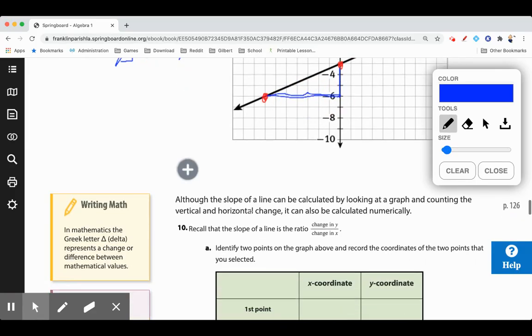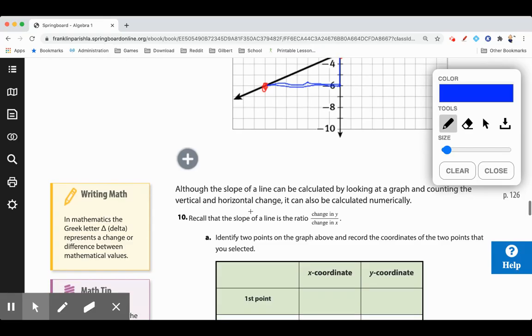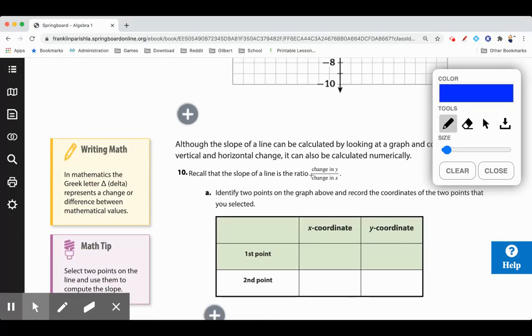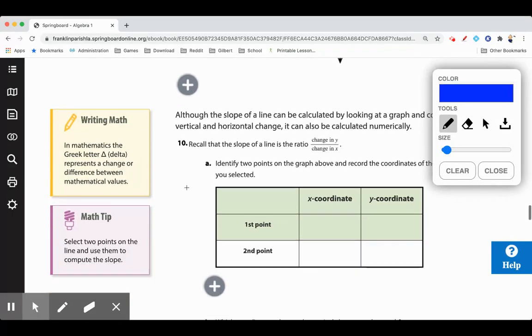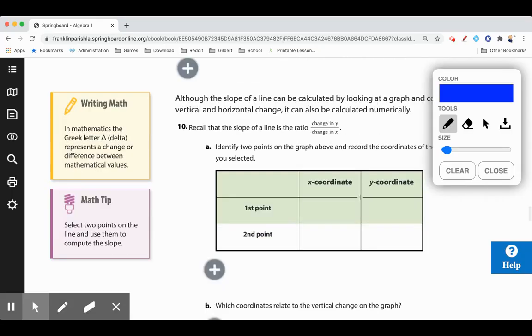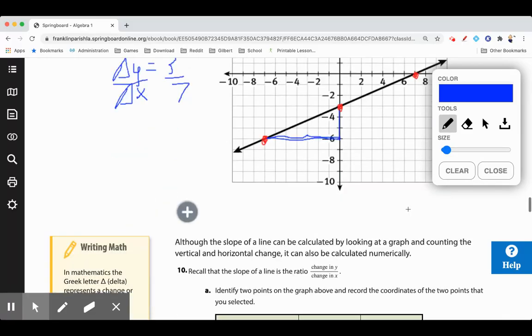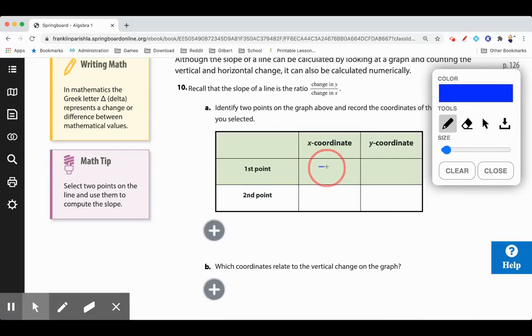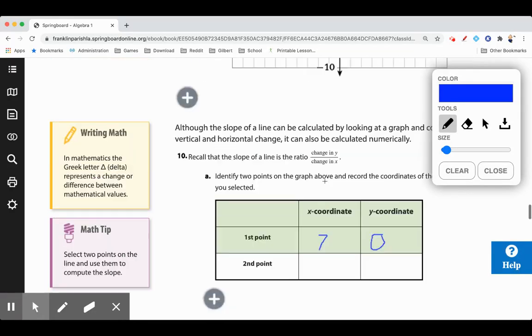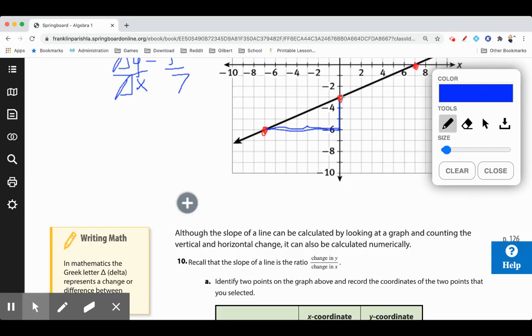Although the slope of the line can be calculated by looking at the graph and counting the vertical and horizontal change, it can also be calculated numerically, which basically means we need to add or subtract numerically with numbers. Recall that the slope of the line is a ratio of change in y over change in x, which is written as delta y and delta x. We need to identify two points and record the coordinates, for example, here it was 7, 0, and here it was 0, negative 3.